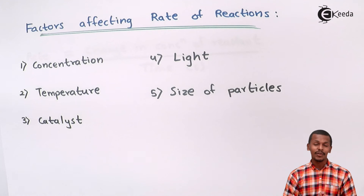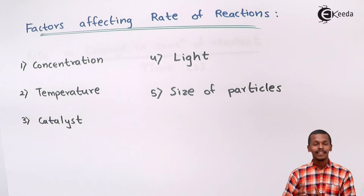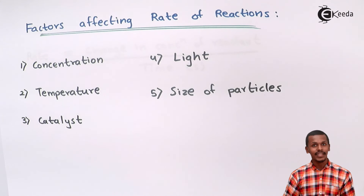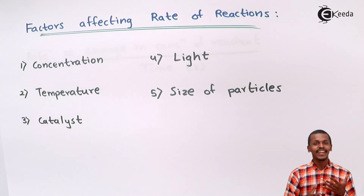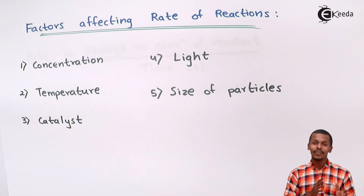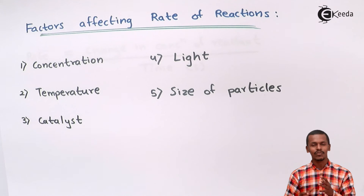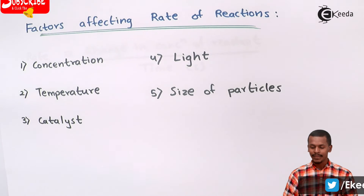Catalyst is a very important factor in this chapter. Catalysts are substances that don't take part in the reaction but help to increase the rate of reaction — even a small amount of catalyst can increase the rate. There are also certain substances that reduce the rate of reaction, known as inhibitors. Inhibitors are necessary when we need to determine the rate of reaction under normal conditions.